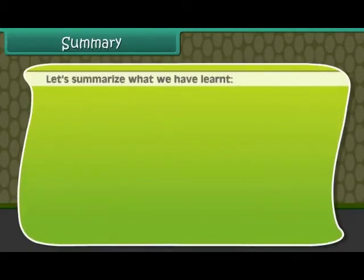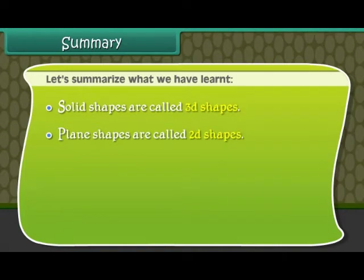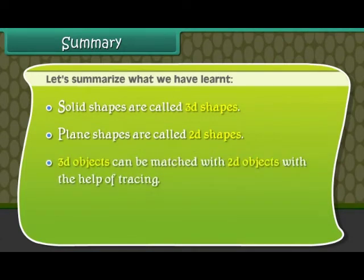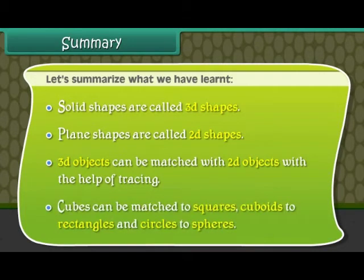Summary. Let us summarize what we have learnt. Solid shapes are called 3D shapes. Plane shapes are called 2D shapes. 3D objects can be matched with 2D objects with the help of tracing. Cubes can be matched to squares, cuboids to rectangles, and circles to spheres.